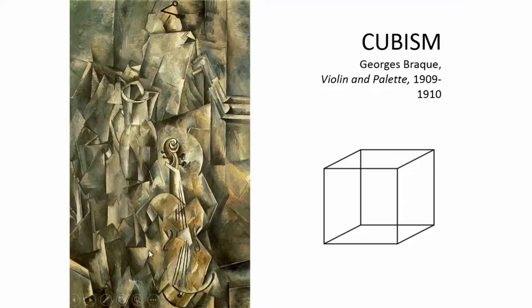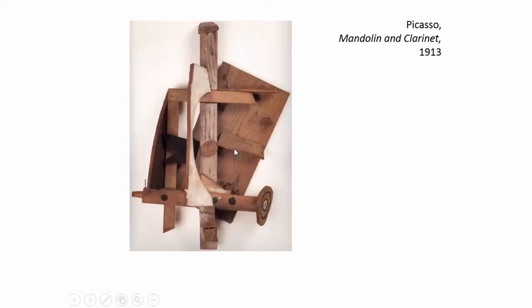An example of Picasso's experimental nature in sculpture is Mandolin and Clarinet. It's an assemblage type of sculpture — he used scraps of wood, drew the strings of the mandolin into a piece of wood, and the holes are where the clarinet would be.